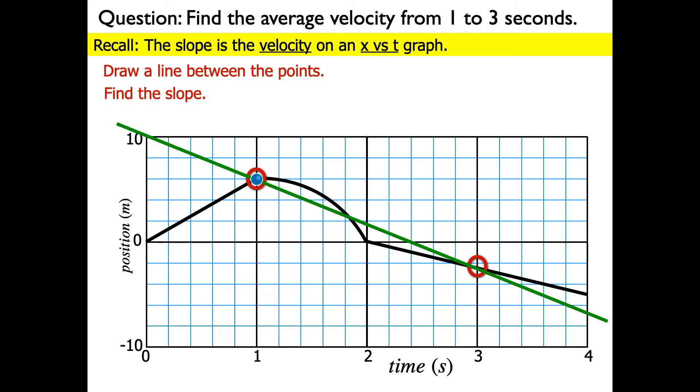So I'm going to start by using 1 second because it goes through the corner of the square. And then I'm not going to use 3 seconds. Again, I'm going down here at 3.8 because it goes through another corner of a square, which makes it easy data to collect.